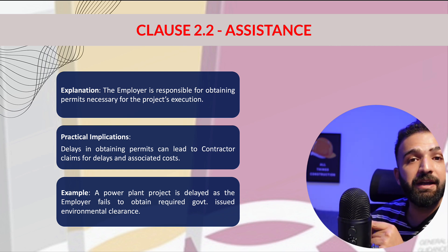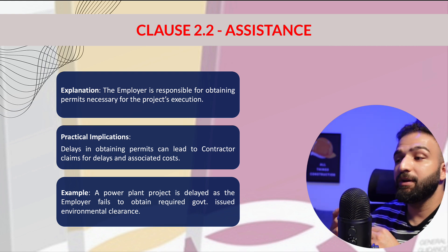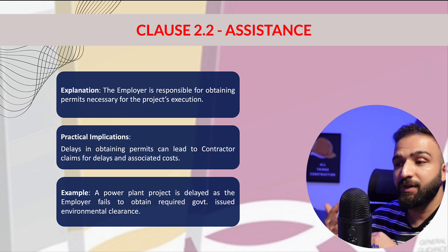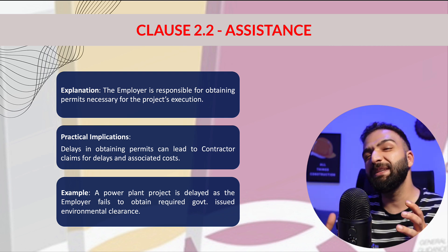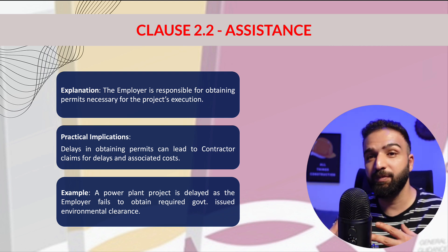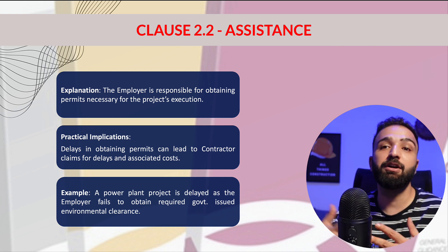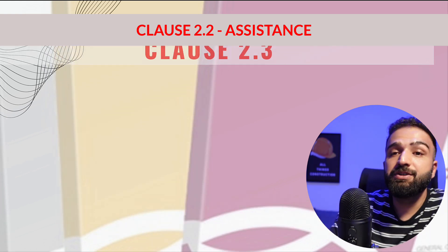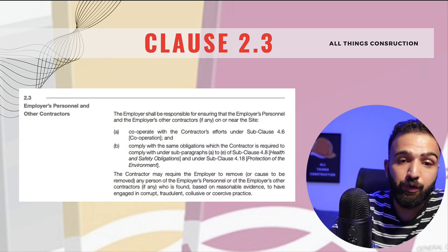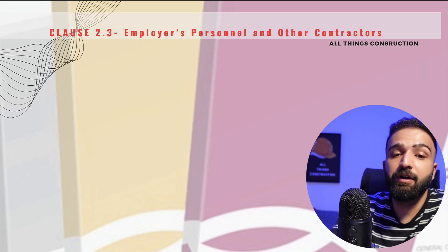The key summary of Clause 2.2 is that the employer must provide reasonable and timely assistance for permits and approvals, and any delays caused by the employer can result in claims for additional time and costs. This clause basically promotes communication and collaboration between both parties so that regulatory and legal bottlenecks can be avoided.